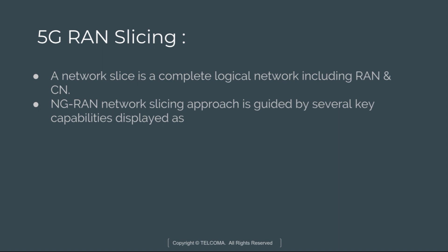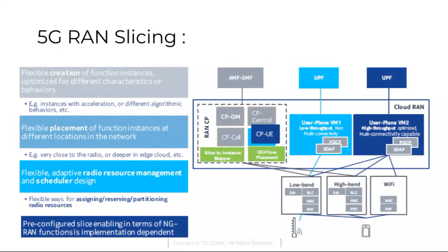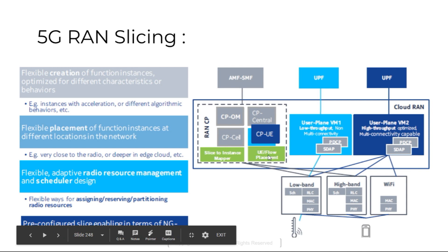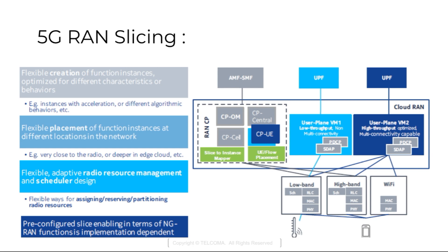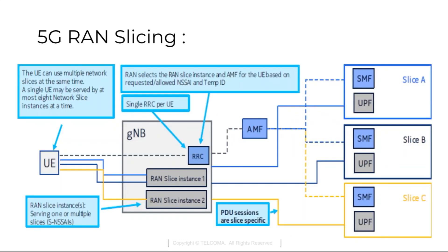The support of network slicing relies on the principle that traffic for different slices is handled by different Protocol Data Unit (PDU) sessions. The NG-RAN slicing approach keeps capabilities such as flexible creation of function instances optimized for different characteristics of behavior, flexible placement of instances, and adapted radio resource management and scheduler design. We can use multiple slices at the same time.